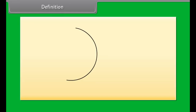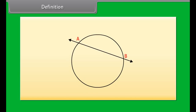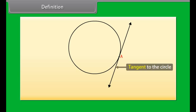Definition. Students, let us draw a circle and a line in a plane. We can see that the line and the circle do not have any common point, so the line is called a non-intersecting line with respect to the circle. In another case, there are two common points A and B that the line and the circle have — in this case the line is called a secant of the circle. In the third case, there is only one point A which is common to the line PQ and the circle.